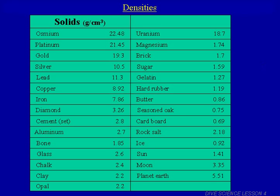Let's look at densities of some different elements and common substances. Among solids, platinum has a density of 21.45 grams per cubic centimeter. Remember, we can also say grams per milliliter since one milliliter equals one cubic centimeter. You might see density units in grams per milliliter, grams per cubic centimeter, or kilograms per cubic meter. Cardboard has a density of about 0.69 g/cm³, and the Sun has a density of 1.41 g/cm³.